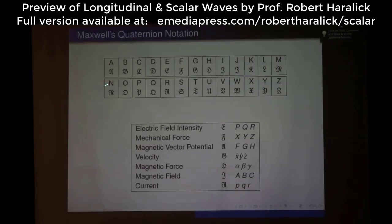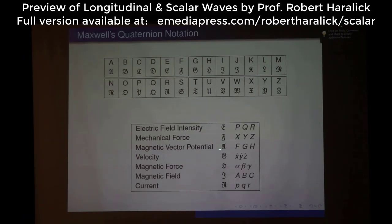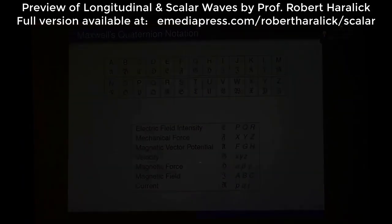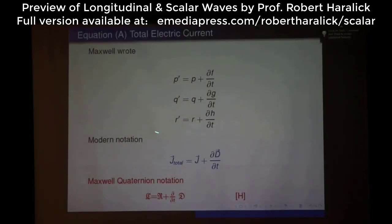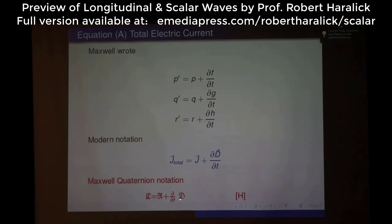I've written the letters against the fraktur, which are the German letters of his time. So instead of writing p, q, r as I showed you in the equations, he would write the German letter E for the electric field, the German letter F for the mechanical force, and the German letter A for the magnetic vector potential. Maxwell wrote these as his equations — that was the modern notation we went over. This is what he wrote as his summary: the current quaternion is the conductive current quaternion plus the time derivative of the electric field quaternion, or the displacement current quaternion.